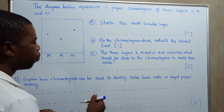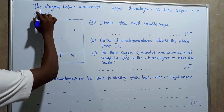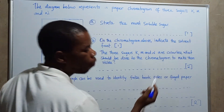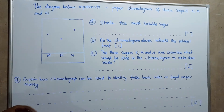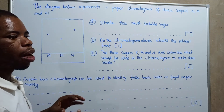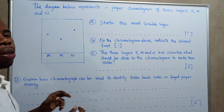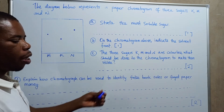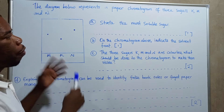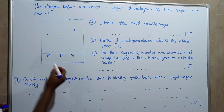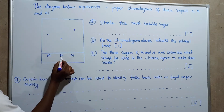The question says: the diagram below represents a paper chromatogram of three sugars K, M, and N. A paper chromatogram is a sheet of paper — or filter paper — which shows the colors when substances separate during chromatography. A chromatogram is a filter paper which shows the separation of substances during paper chromatography.